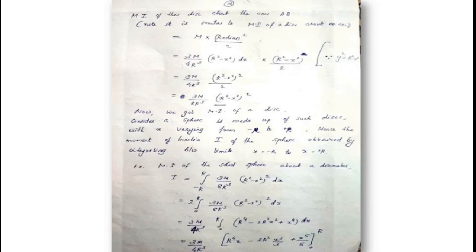The moment of inertia of the disc about the axis AB equals (mass × radius²) / 2, which gives 3M / (4R³) × (R² − x²)dx × (R² − x²) / 2. This simplifies to 3M / (8R³) × (R² − x²)² dx. Hence, the total moment of inertia of the sphere is obtained by integrating between the limits x = −R to +R, so I = ∫ from −R to +R of [3M / (8R³) × (R² − x²)²] dx.